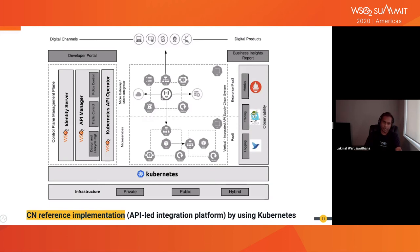This is a reference implementation of a cloud native API-led integration platform using Kubernetes — specifically a cloud native API manager — because it reduces operational overhead by automating all Kubernetes-related deployments. Stats are captured at the API gateways and aggregated using tools like Prometheus, Jaeger, and Fluentd. Using all these collected stats, we can generate business insights reports.